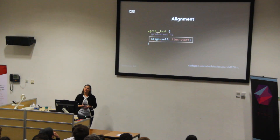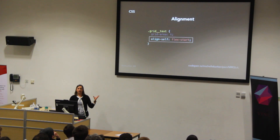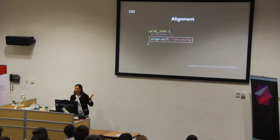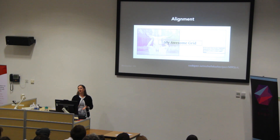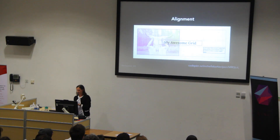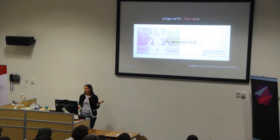We can also use alignment properties with grid, just like we can with Flexbox. Here I'm using align-self on the text block to align it to the top of our component. But if we have another variant where we want the text block aligned to the bottom, we could use flex-end and it would always align to the bottom of our component.